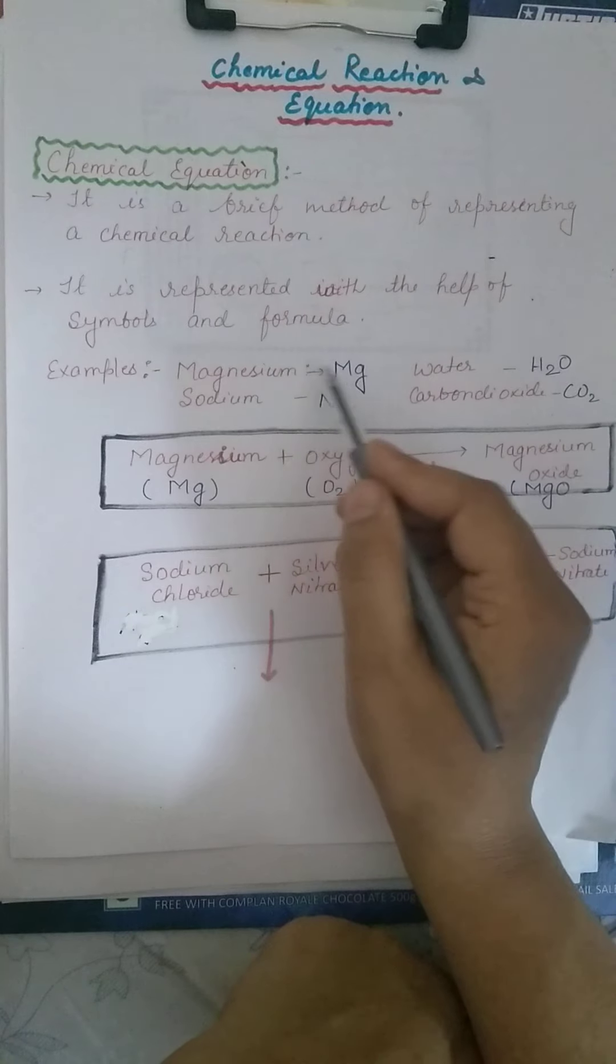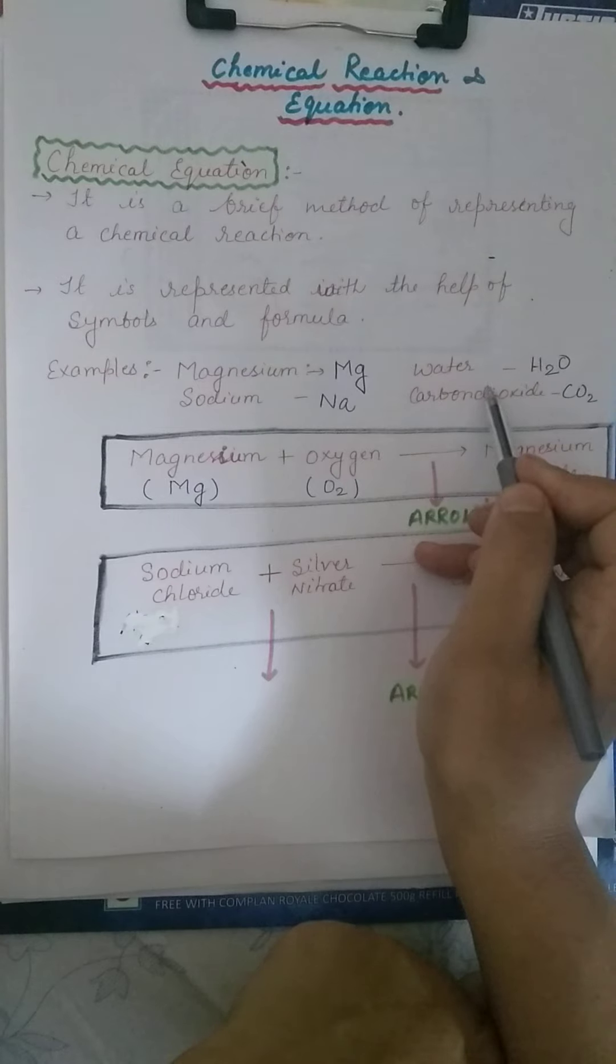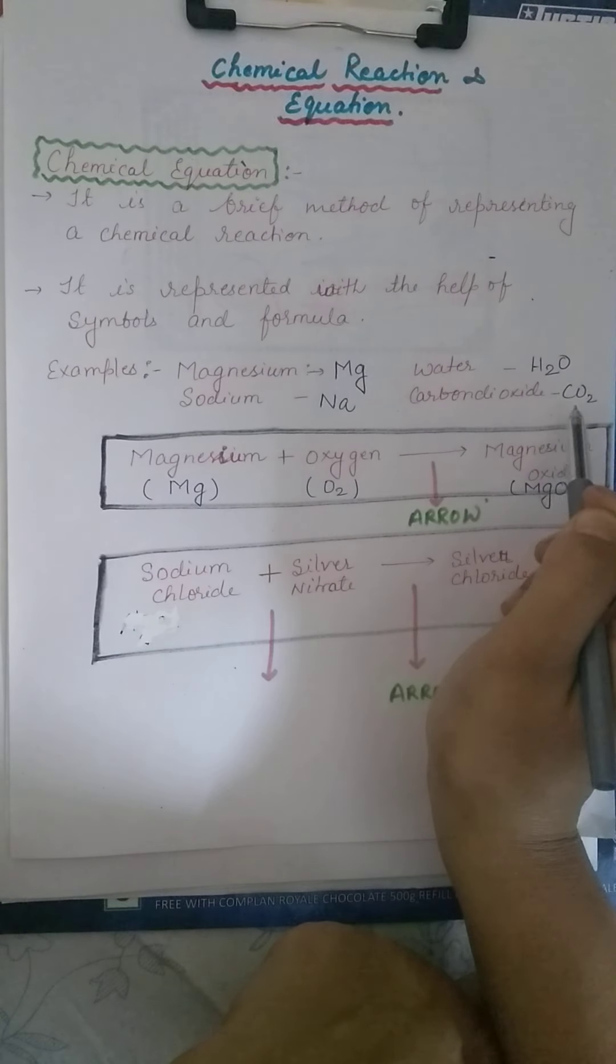Magnesium - what is the symbol of magnesium? Mg. Water, H2O. Sodium, Na. Carbon dioxide, CO2.